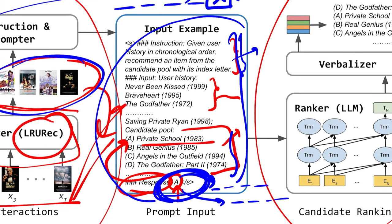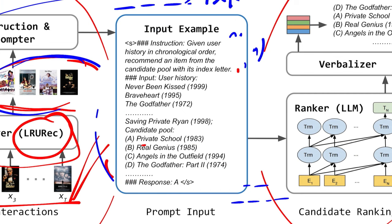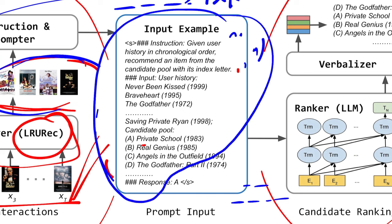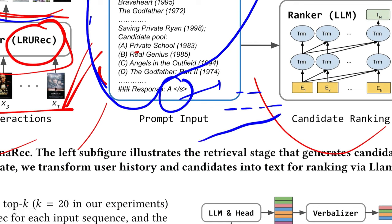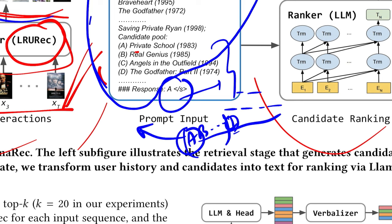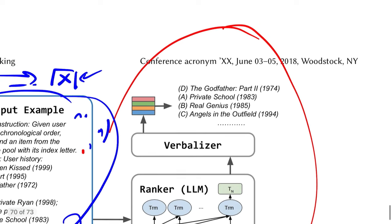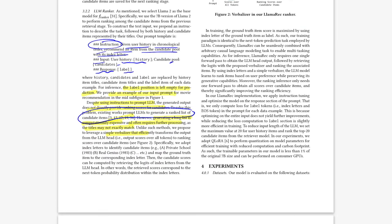During inference, you give the model up to the response point and it's expected to produce the output. But instead of directly outputting a discrete token, you go to the LLM head and output the distribution across words likely to be produced at that point. You'll see a softmax over many words, with most probability mass on letters A through T — the 20 index letters the model has seen during fine-tuning. You then map those back to actual titles: A is Private School so it ranks first, D is The Godfather so that's second. That's the preference ranking you generate from the logit distribution.